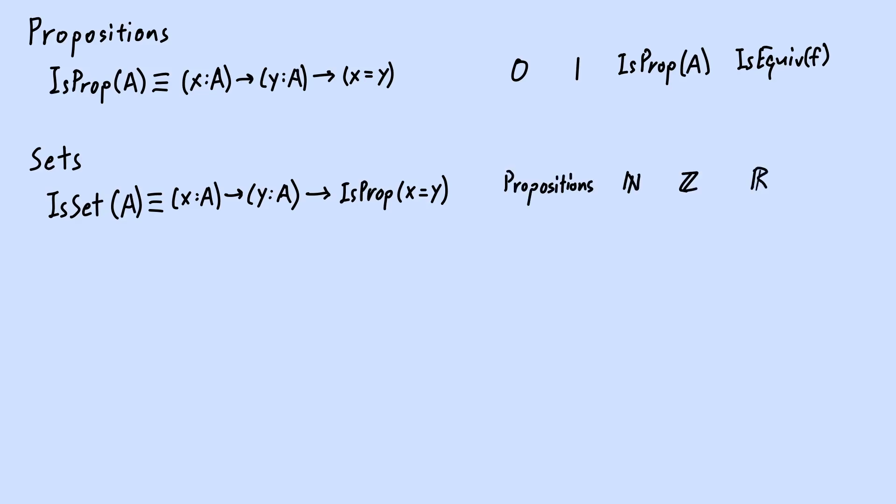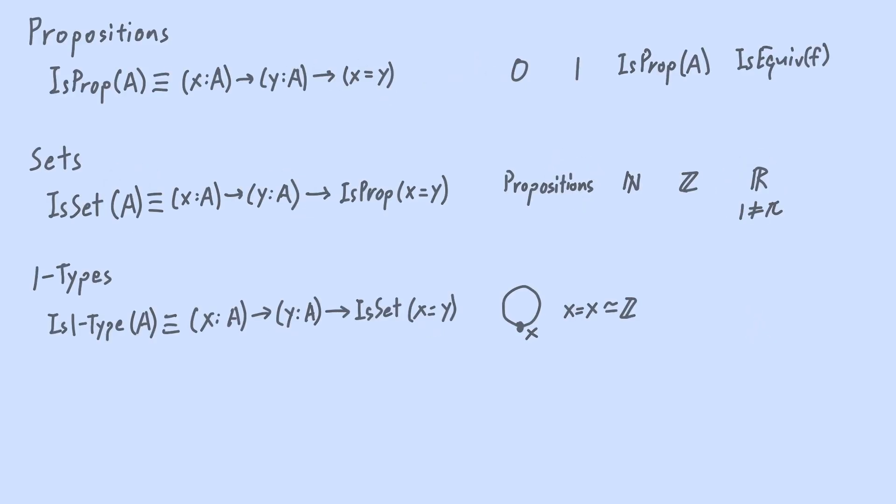Do be careful to distinguish paths as in elements of the identity type from paths on a topological space. 1 is not equal to π as real numbers. Despite there is a path in the topological sense connecting them, there is no such path in the sense of identity type. Next level is where it gets exciting. We have 1-types whose identity types between elements are sets. For example, this circle type is a 1-type and not a set, because the elements of x equals x, paths from x to x, are characterized by their winding numbers. This is to say how many times a path goes around in one direction, and we count negatively if the path goes in the other direction. So x equals x is equivalent to this set of integers.